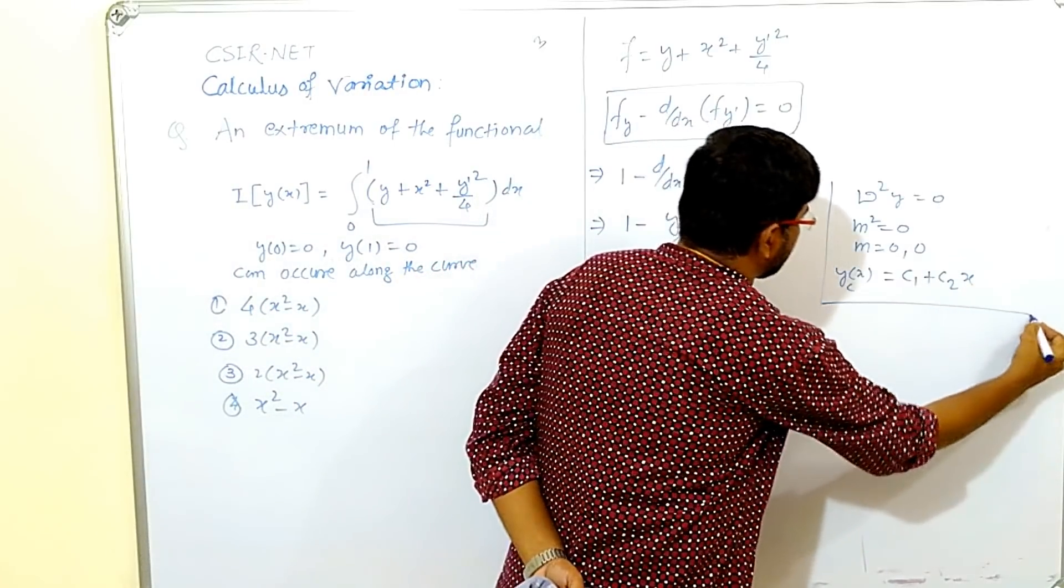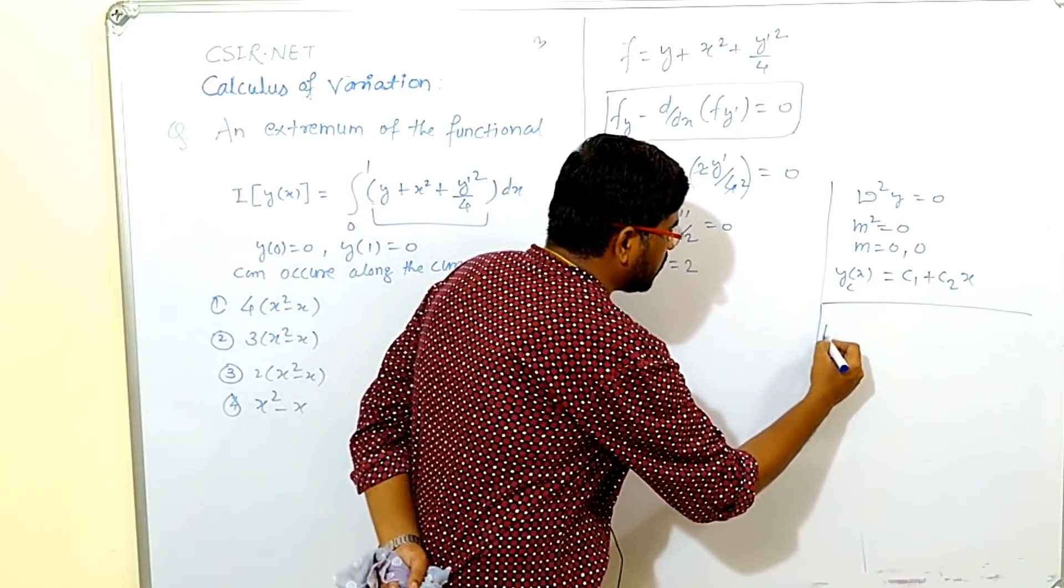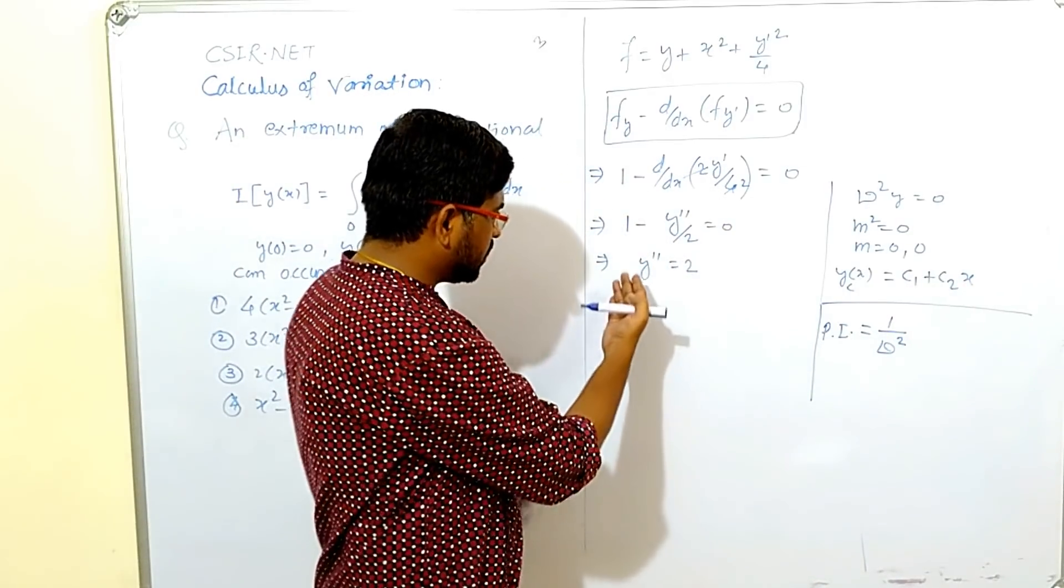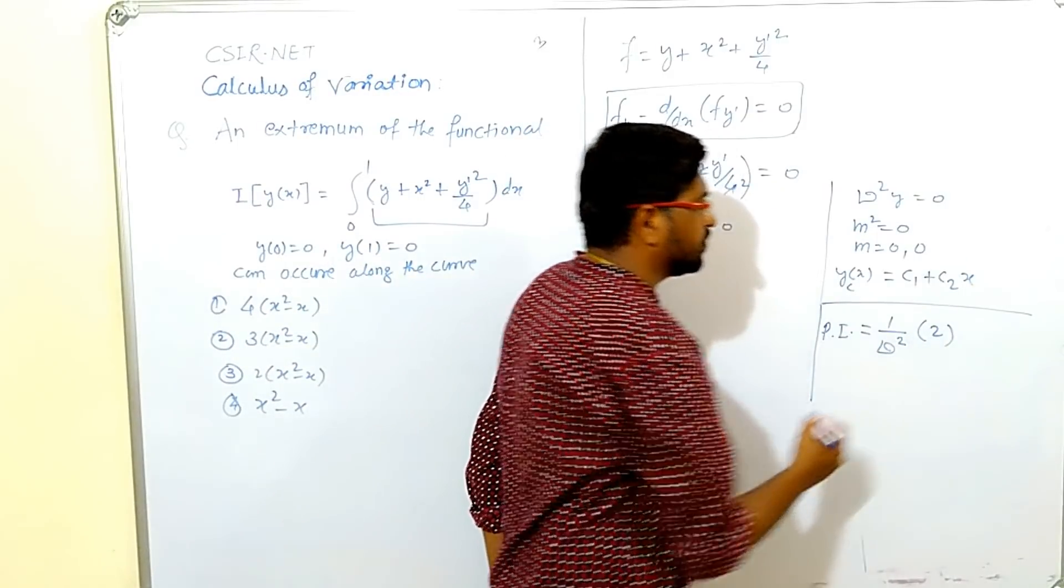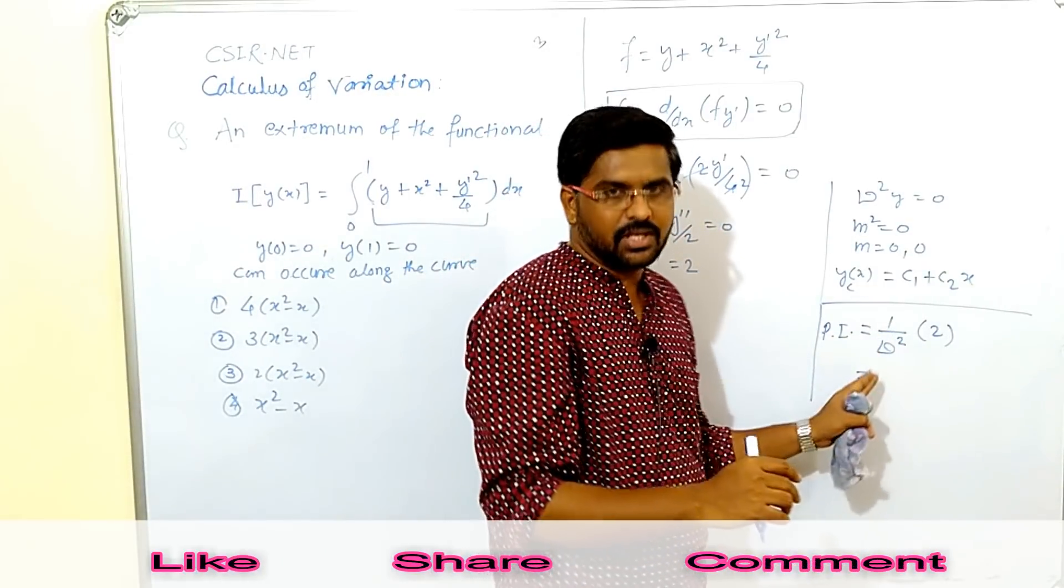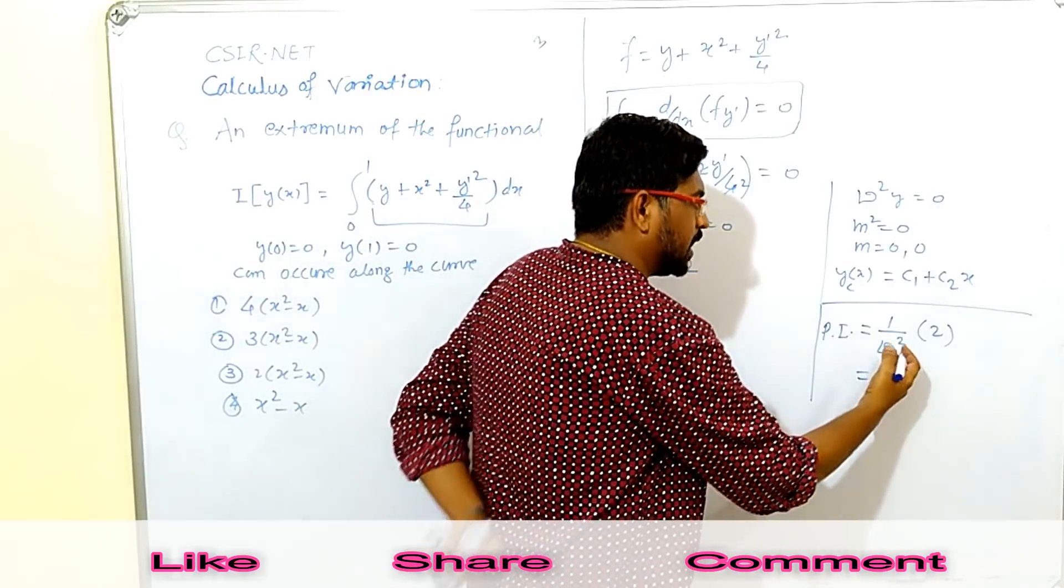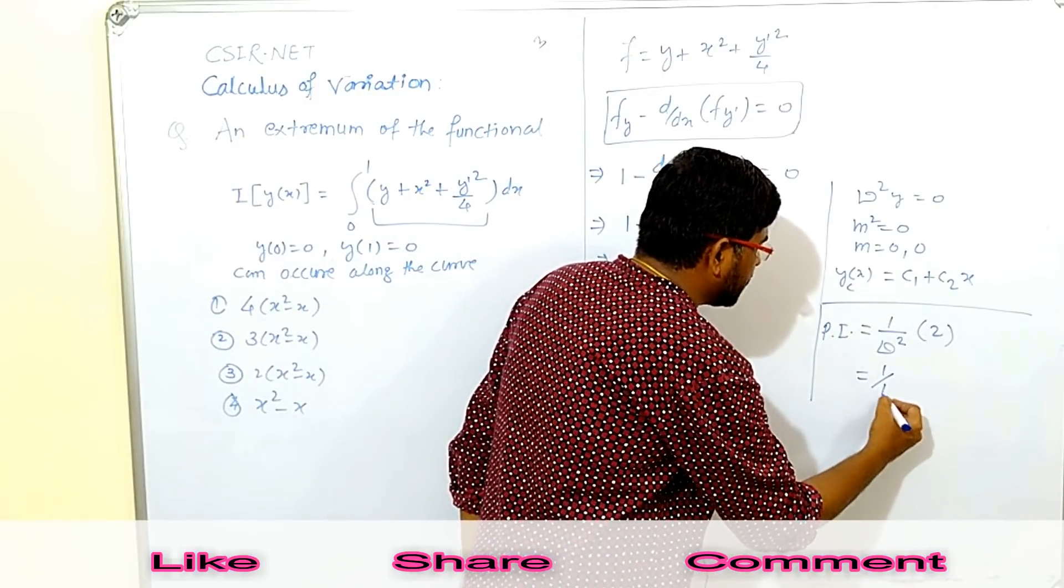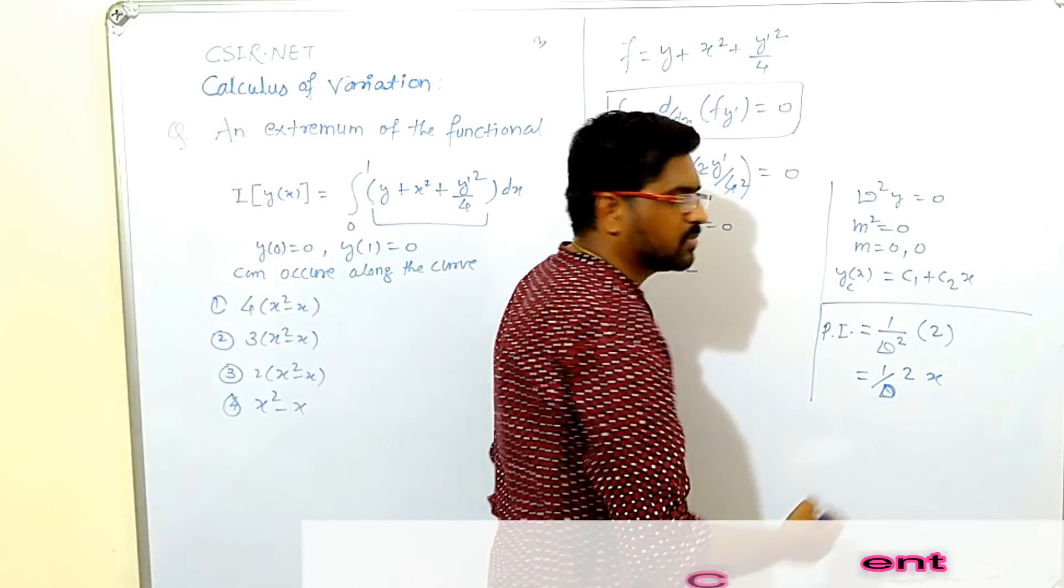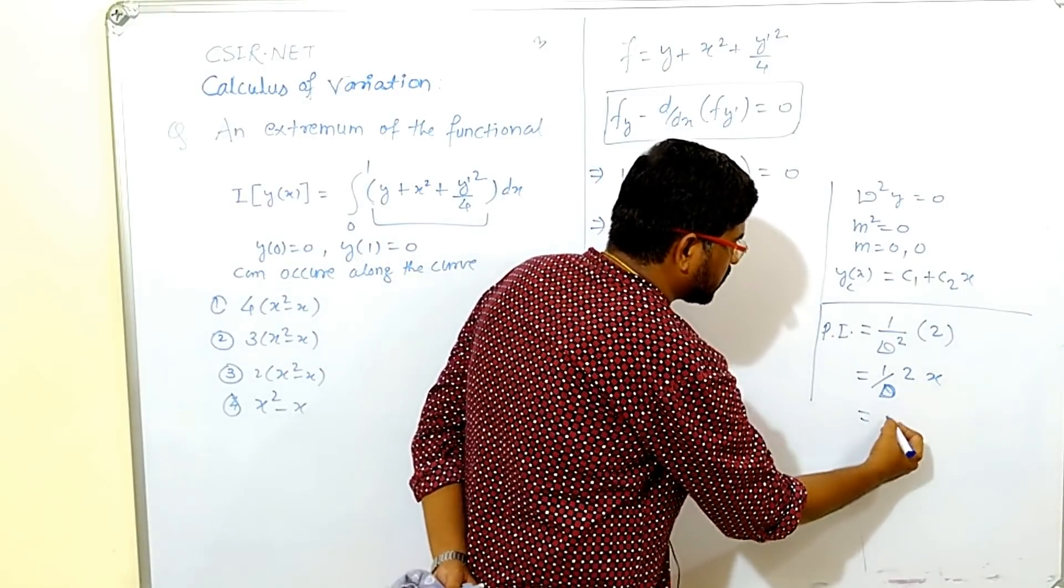This is about complementary function and second we have to find particular integral also because this is non-homogeneous differential equation. I find particular integral equals to now you know 1 over D square and whatever function in right hand side is 2. Particular integral is 2 times integration actually, 1 by D means integration. 1 by D of 2 and integration of this is x because integral 1, and again we get integral. It's x square by 2 and 2 gets cancelled, we get x square.